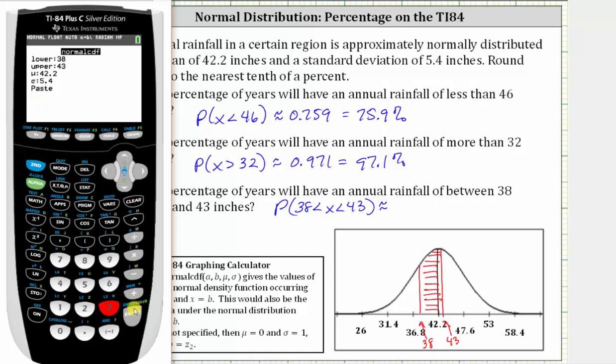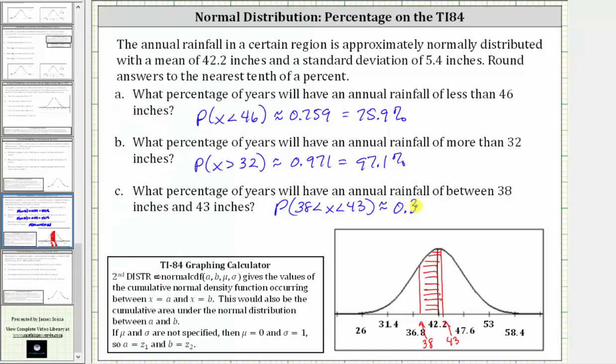Everything else stays the same. Go down to paste, press enter, and enter again. Which gives us approximately 0.341, which is 34.1%.